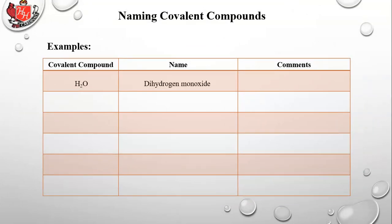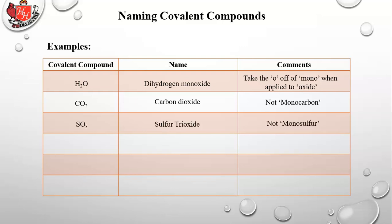H2O. There's two hydrogens and one oxygen, so it's dihydrogen monoxide. Take the O off of mono when applied to oxide. So instead of monooxide, it's monoxide. Carbon dioxide. It's not monocarbon dioxide. You don't attach mono to the first element, the carbon in this case. Sulfur trioxide, not monosulfur trioxide.